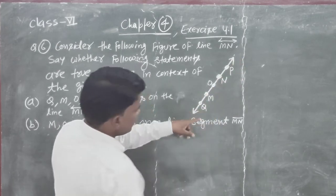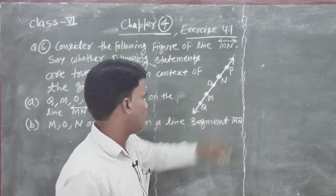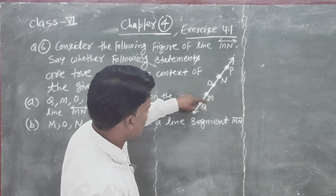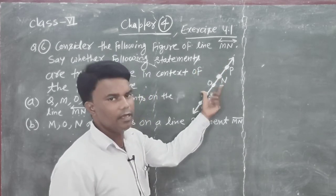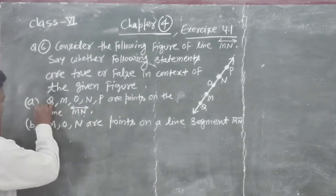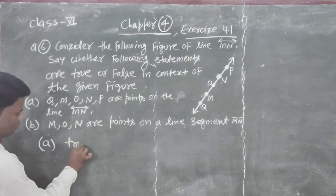Q point bhi aage, or P point bhi aage. Q, M, O and P completely MN line par. So there's A, true.